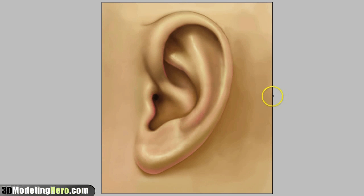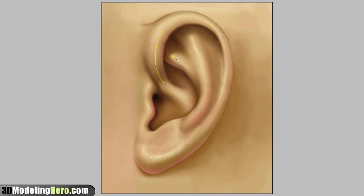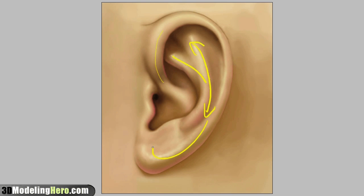Normally with any kind of model, we'll look at it and try to identify the edge flow. Now for the ear, because it's so narrow, there's really not a lot of options — it's just going to kind of go around and follow the long shapes. So let's forget about the edge flow for now.